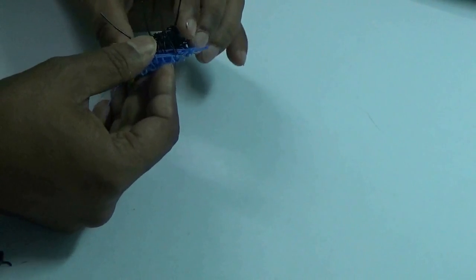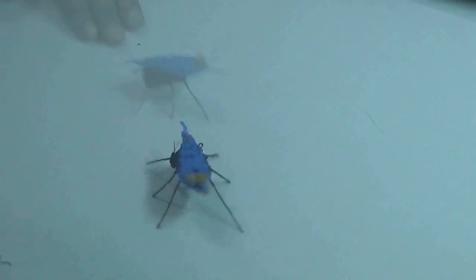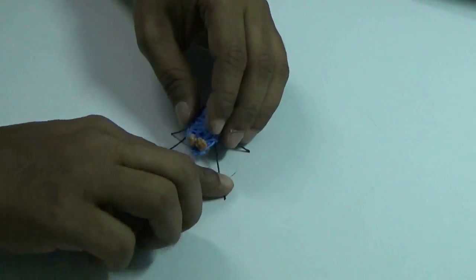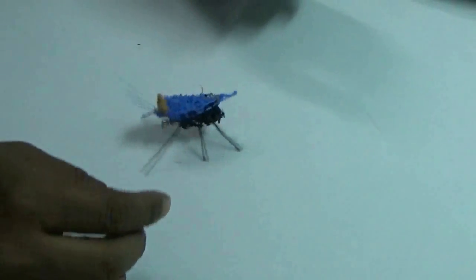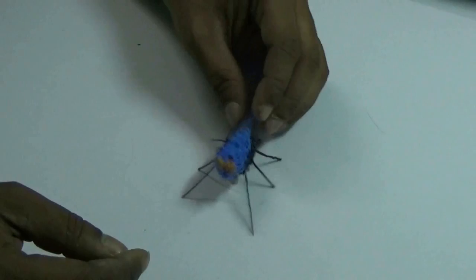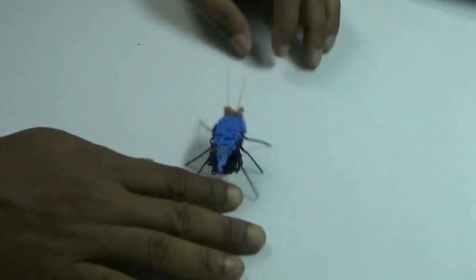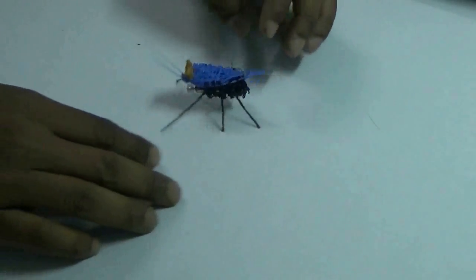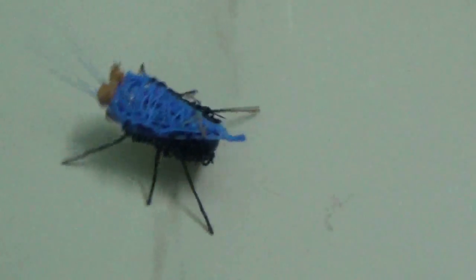See, it started vibrating and it will give a random motion. If you try to just touch it, it will move around here and there, just random. It gives you an insect-like feeling.